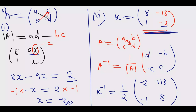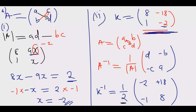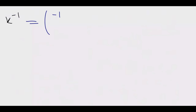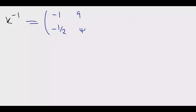Now we simplify by multiplying the scalar one-half into the matrix. Half times negative 2 is negative 1; half times 18 is 9; half times 8 is 4; and negative 1 stays negative 1. So K inverse equals the matrix with first column [−1, −1] — wait, first column [−1, 9] and second column... so K inverse is [−1, 9; −1, 4]. Once you complete this, you get those 4 marks.